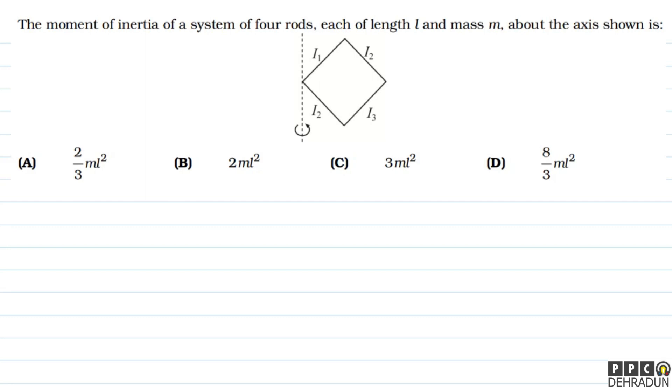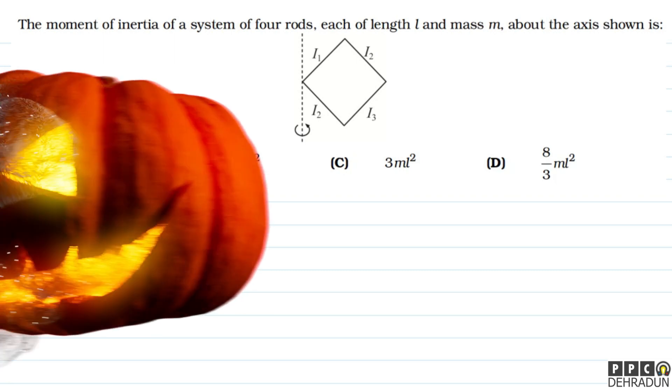The question says: the moment of inertia of a system of four rods, each of length L and mass M, about the axis shown is — (dash).